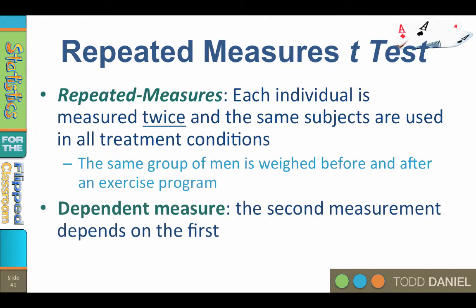This design is sometimes called a dependent measure because the score on the second measure depends upon the score from the first measure. If you lost 100 pounds, the meaning of that 100 pounds depends on whether your starting weight was 200 pounds or 400 pounds. In that sense, each subject is his or her own control group. Your score on the pre-test is your starting point and the comparison for your score on the post-test. The same amount of change means something different depending on where you started.